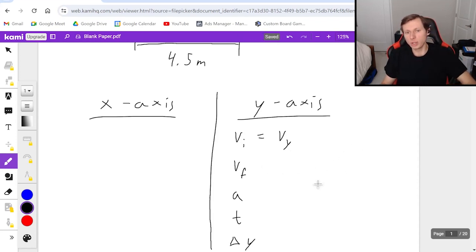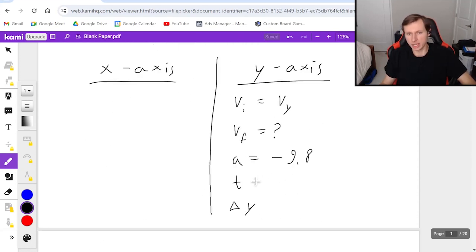Now v final, we don't know v final. Don't say zero because it's not zero. We don't know the speed as the ball goes through the hoop which is the final v. Acceleration for the y-axis is always negative 9.8, so we do know that. The time we also don't know. There's no indication of time so I'll put question mark for that as well. And then finally the delta y.